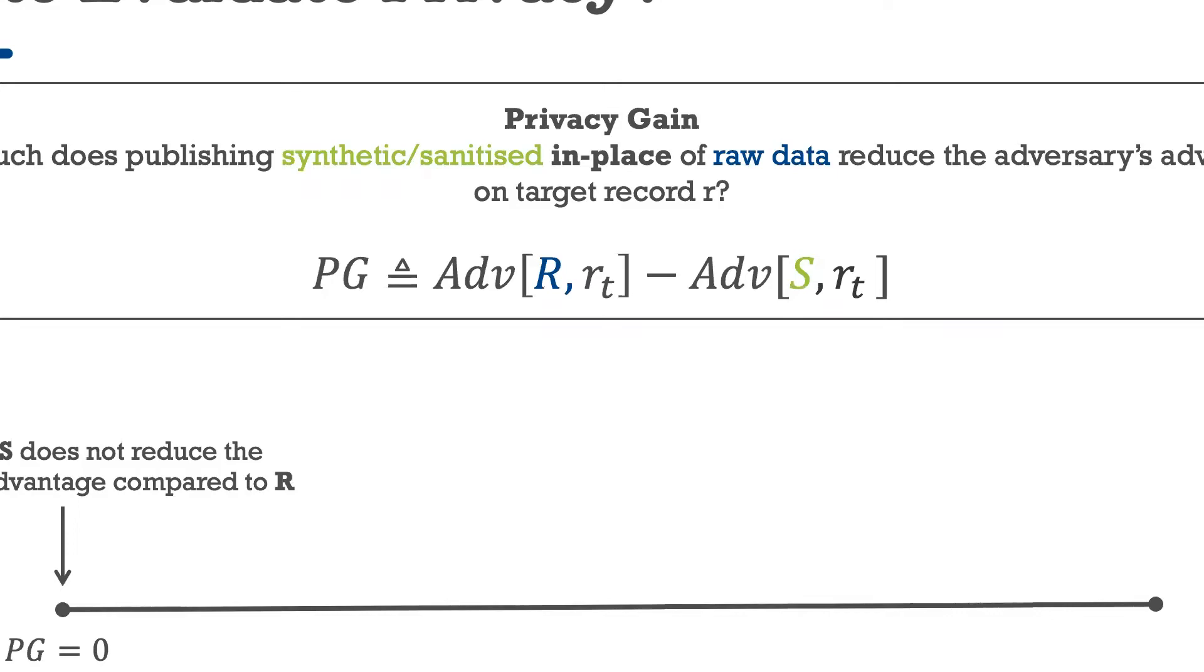Under some assumptions, the privacy gain typically ranges between 0 and 1, whereas 0 gain means that publishing a synthetic version of the data actually does not reduce the adversaries advantage compared to the scenario in which we had published the raw data. Ideally, we want to observe a gain of 1 for all records in the raw data. This indicates that the synthetic data does provide good protection against the privacy leakage of data publishing. A positive gain somewhere between these two points indicates that publishing S does reduce the adversaries advantage to some extent, but does not give perfect protection.